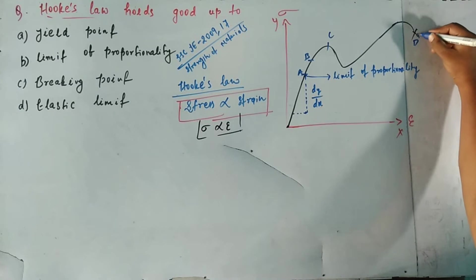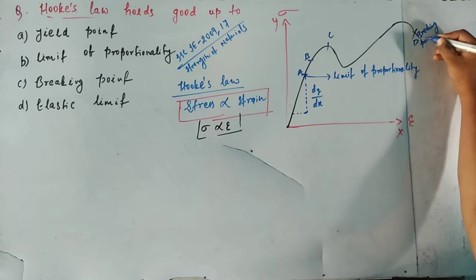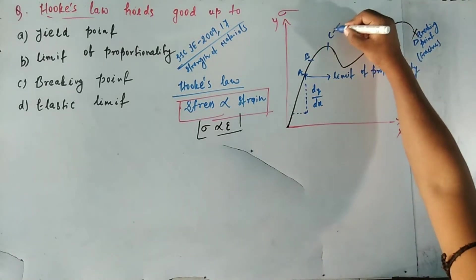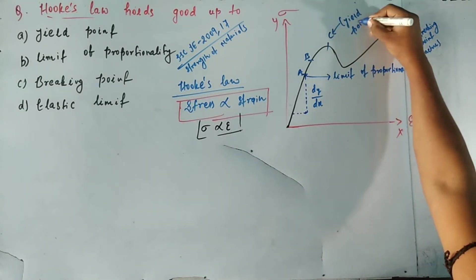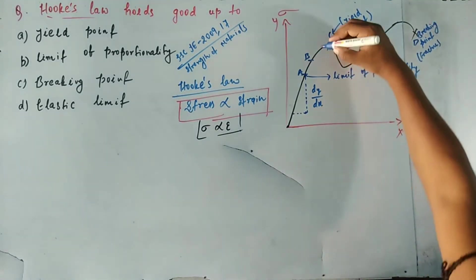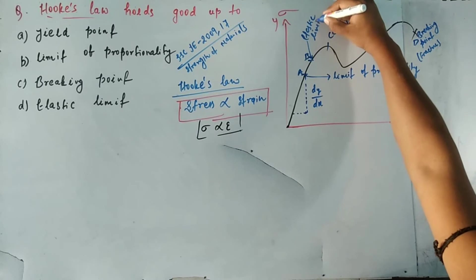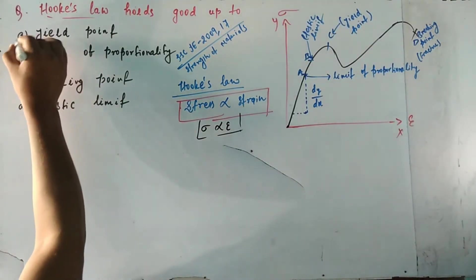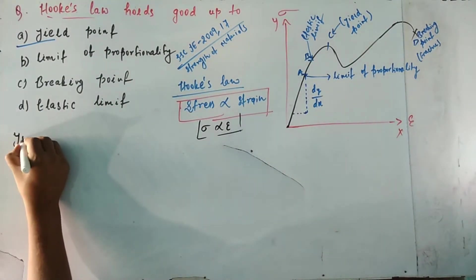On the stress-strain diagram, point A is known as the limit of proportionality. Point D is known as the breaking point or fracture point. Point C is the yield point, and point B is the elastic limit. We have now identified all four points on the diagram.